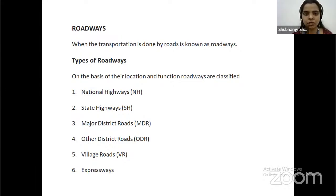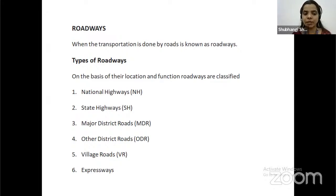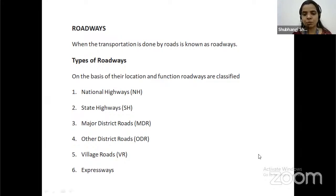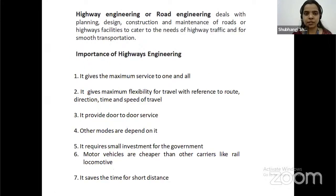A state highway connects two states. The difference between state and national: when we share cultures across the country that is called national, and when the area is defined by a boundary it's called state. A major district road connects big cities; other district roads connect small cities to big cities. An expressway is the shortest distance between two cities or two important locations. Highway engineering or road engineering deals with the planning, design, construction, and maintenance of roads and highway facilities.